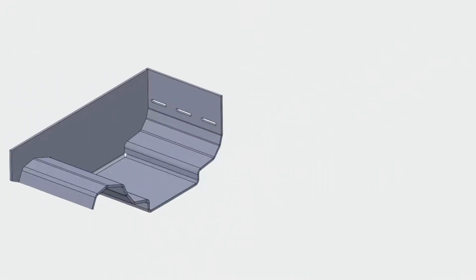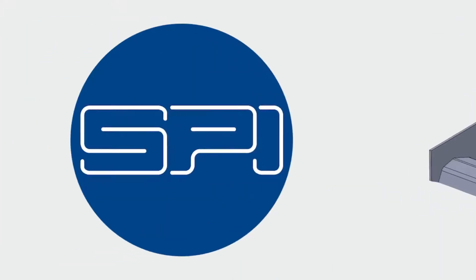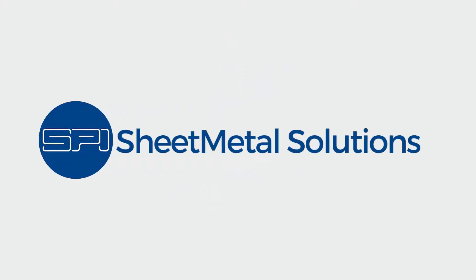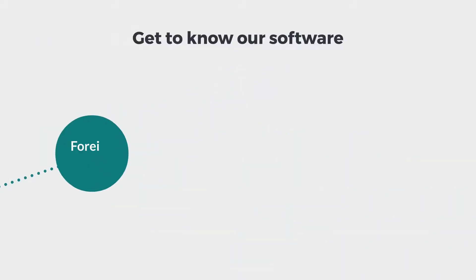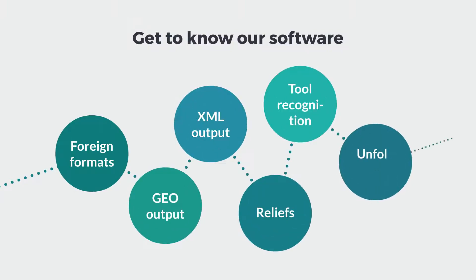If you design sheet metal for bending, you know how important it is to add bend reliefs that are suited for the material thickness as well as for the bend radius. SPI's sheet metal solutions can take care of that for you. In this video series we introduce you to some of the ways our sheet metal software can save you time and effort in designing, unfolding and manufacturing sheet metal parts.